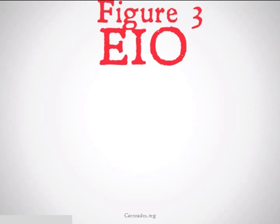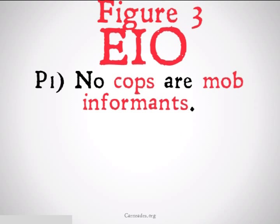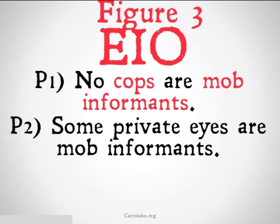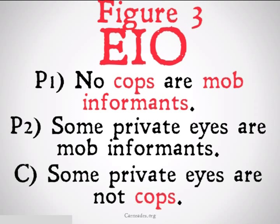Figure three, EIO: No cops are mob informants. Some private eyes are mob informants. Therefore, some private eyes are not cops. Our middle term, mob informants, is going to be distributed in the first premise. So this will also pass rule one.